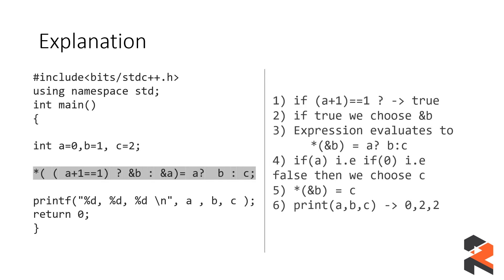Here's the step-by-step explanation: first, a + 1 == 1 evaluates to true, so we choose &b. The expression reduces to *(address of b) = a ? b : c. Since a is 0, which evaluates to false, we choose c and not b. The value at address of b becomes c. When printed, the answer is 0 2 2.